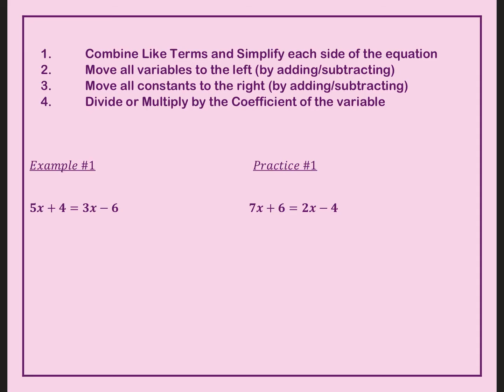Step two, we're going to move all the variables to the left side of the equation. Right now we have this positive 3x, but I want this to be gone. So the way to move a positive 3x is to subtract 3x from both sides. Now the reason I do this is to balance that equation. So then I have 2x + 4 = -6.